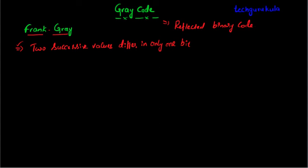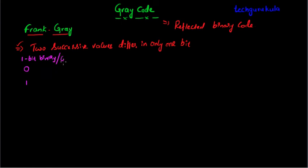Now to start with, let us take one-bit binary values. In one bit we can have two values: 0 and 1. We can call this one-bit binary, and in this case, this is also the one-bit grey code.